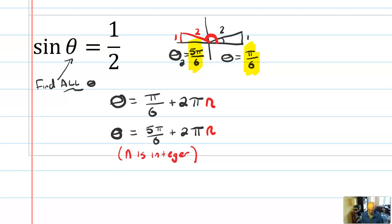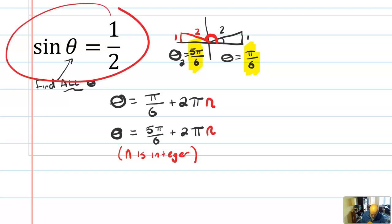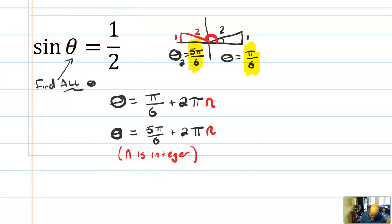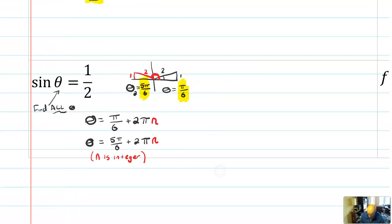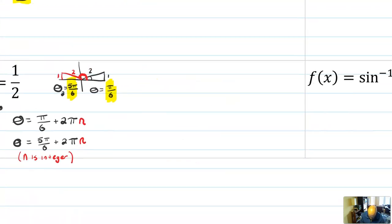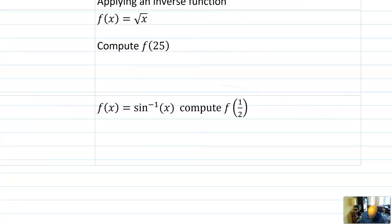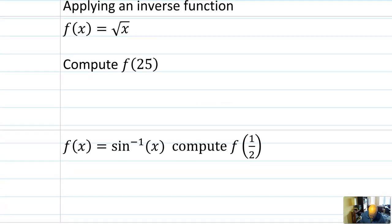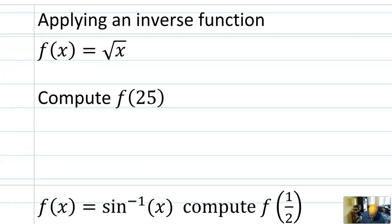That's how you solve a trig equation — that might be most familiar to you, and we'll cover this more in chapter 5 where we find all solutions to equations like this. But today I want to talk more about inverse trig, something like finding sine inverse of x. To do that, I want to go back to our square root example.